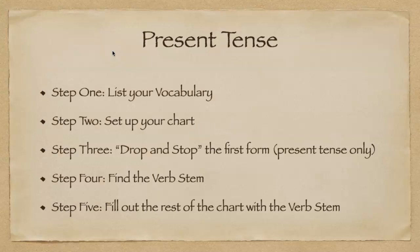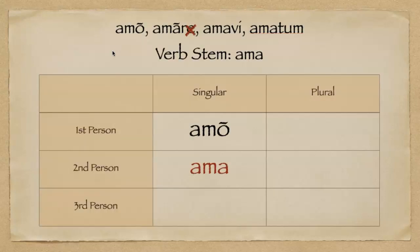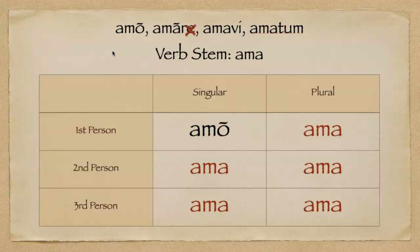Step five: we're going to fill out the rest of the chart with the verb stem. We take that verb stem and put it in the rest of the blanks in our chart — AMA, AMA, AMA, AMA, and my personal favorite, AMA.